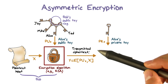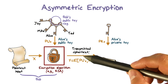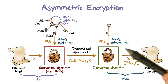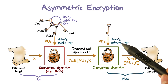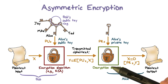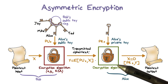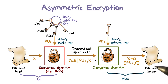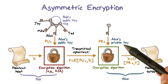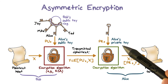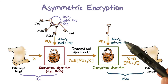Bob then transmits the ciphertext to Alice. It is mathematically guaranteed that only Alice can decrypt this ciphertext properly into plaintext, because only Alice has the corresponding companion private key.